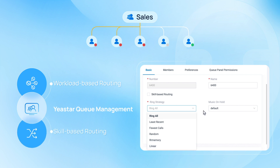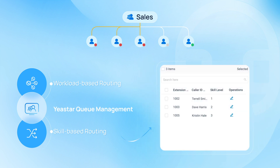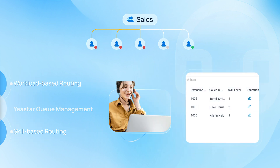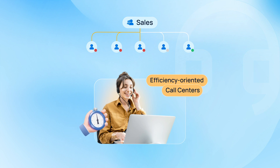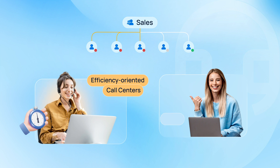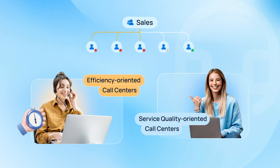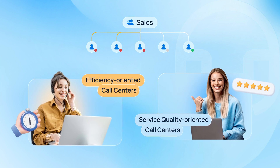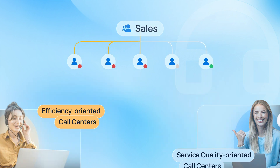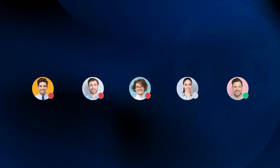Additionally, skill-based routing is available, allowing you to customize priority levels for each agent according to their skill set. This flexibility caters to both efficiency-oriented call centers focused on maximizing throughput and service quality-oriented call centers prioritizing customer satisfaction and agent proficiency.